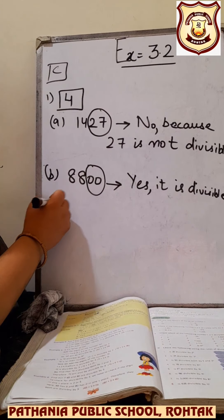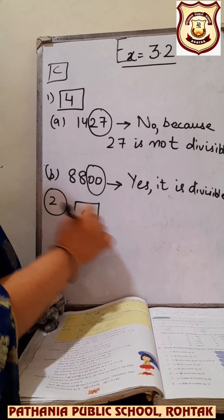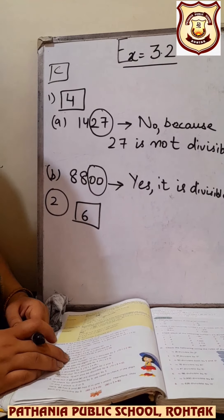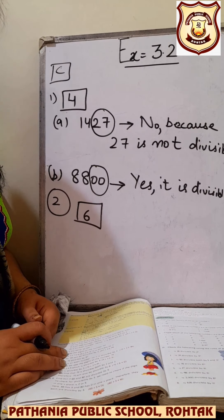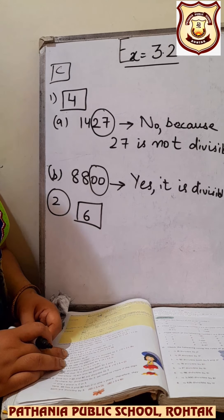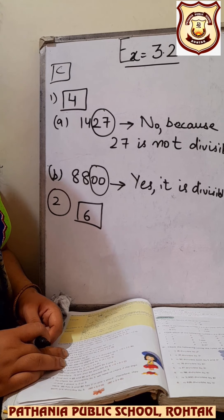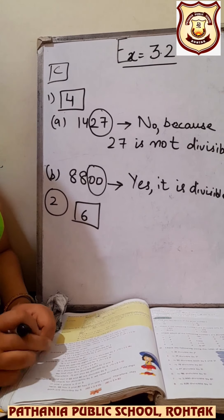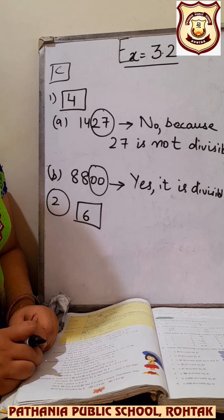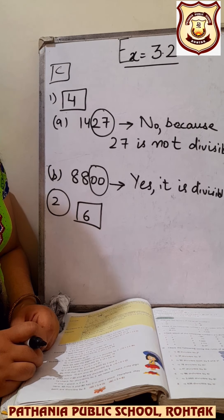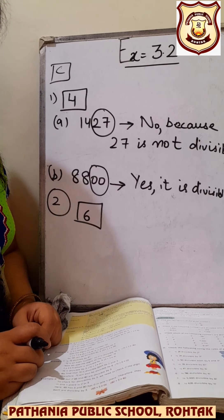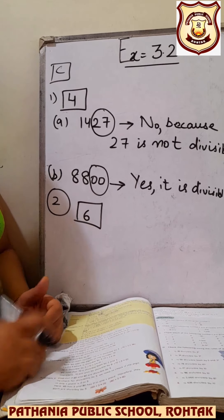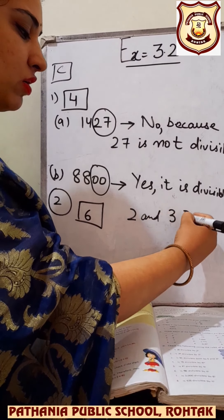The second part of question C is to check divisibility by 6. To check whether any number is divisible by 6, you will first check divisibility by 2, then by 3. If the number is divisible by both 2 and 3, then the number is divisible by 6. If the number is divisible by only 2 but not by 3, then the answer is no, it is not divisible by 6. A number is divisible by 6 only if it is divisible by both 2 and 3.